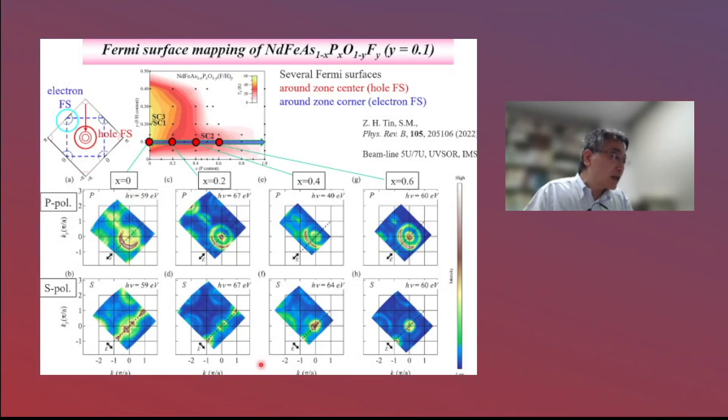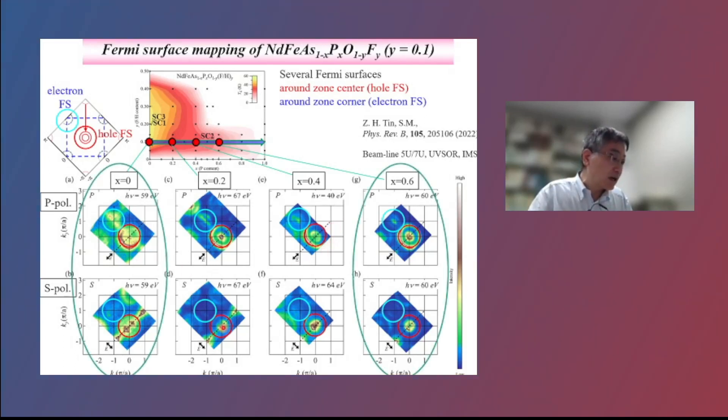These panels show the Fermi surface mapping in P and S polarization configuration for various phosphorus doping levels of neodymium 1111 system. We observed several hole Fermi surfaces around zone center and electron Fermi surface around zone corner. Next, I show the band dispersion only around zone center for these samples. These two samples to discuss the XY band.